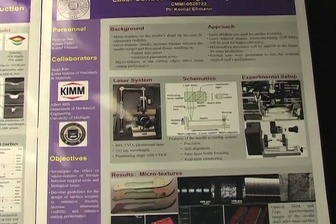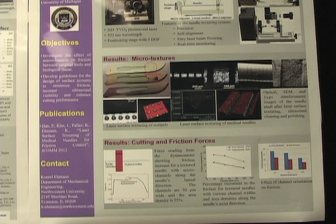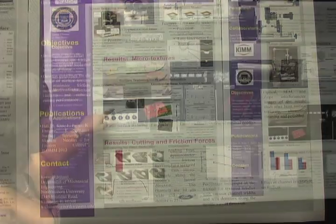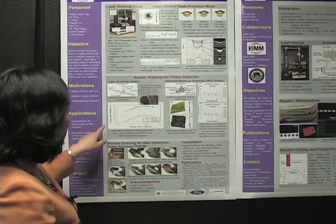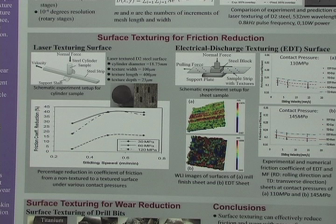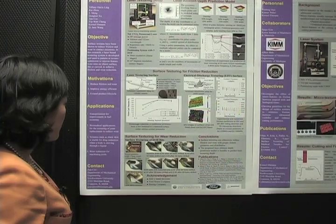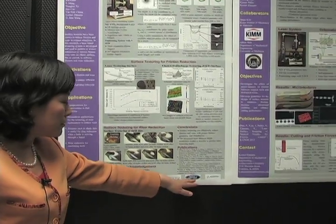And also we also work on on surgical blades. We textured the surgical blades. In order to reduce the cutting force and friction. And what we have shown is that with the proper texture you can reduce the friction by almost like 40%. And this is a big energy saving. Because if you reduce the friction force you can reduce the force that's needed to overcome the, to make the work.